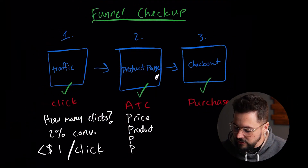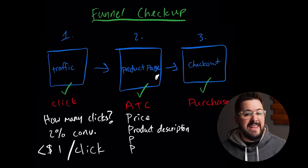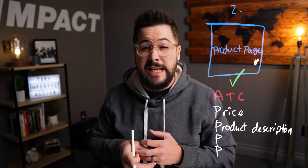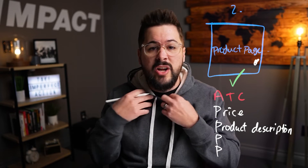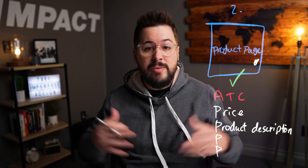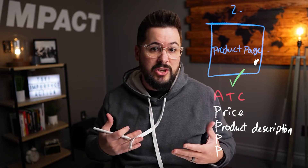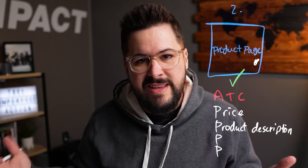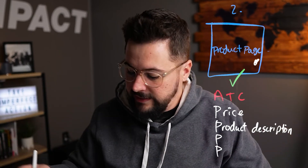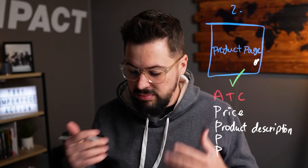The second thing is product description — this is a big one. A lot of people use generic product descriptions that don't sell the product and don't communicate the benefits. A lot of people are communicating the features instead. Take a t-shirt — you might say it's 100% cotton and has a ribbed collar, but people don't care about that. They care that the t-shirt is going to fit nice, be soft, the print is going to be good, and it's going to get to them fast. Those are the benefits. Make sure you've written a compelling product description.